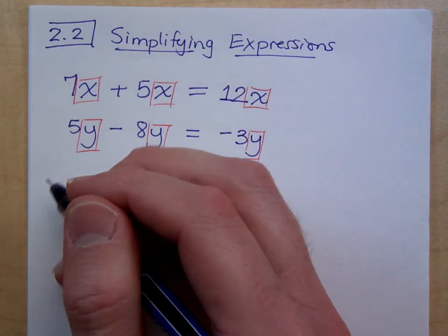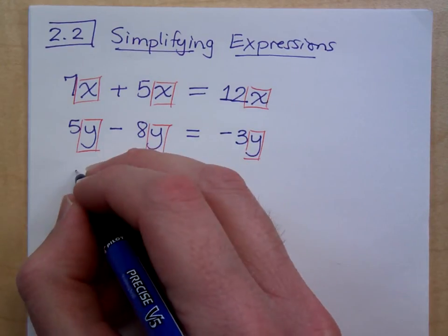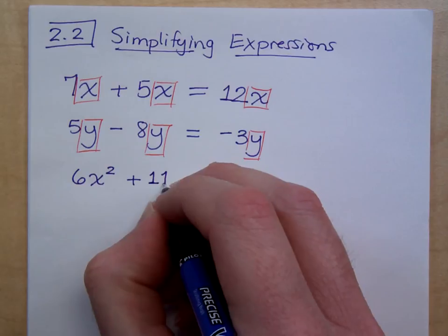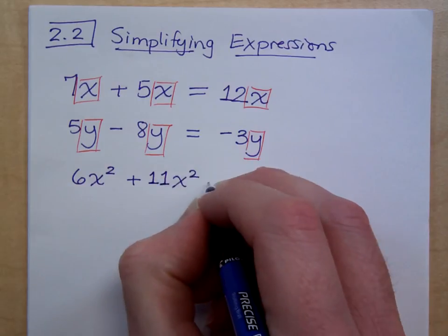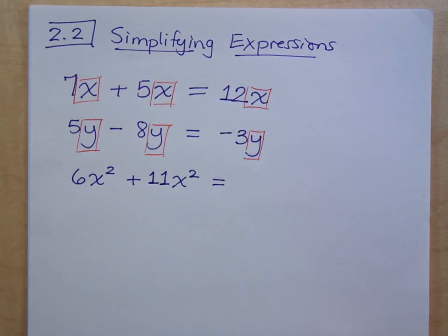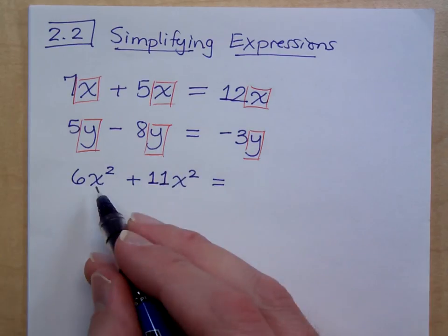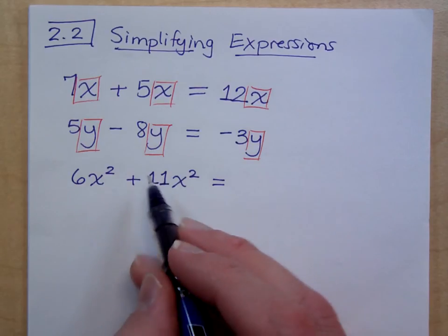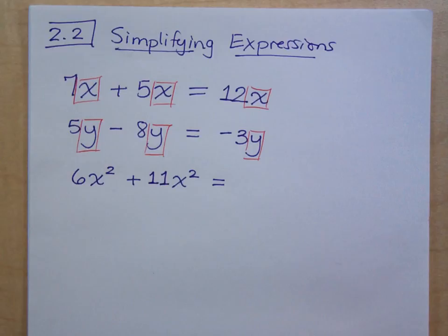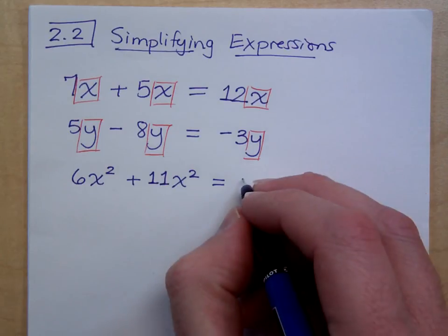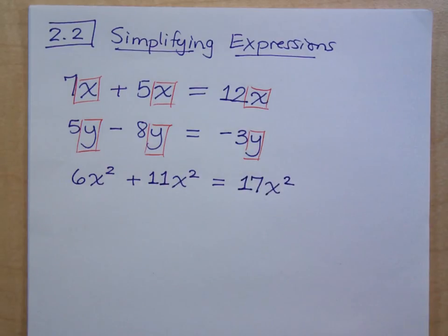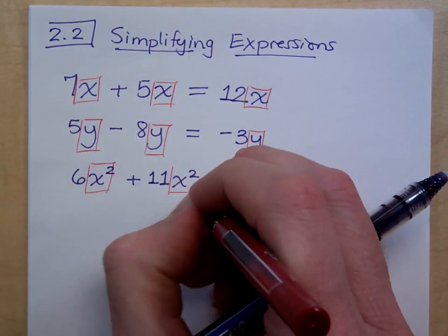Now we can make things a little more interesting. If I have, say, 6x squared plus 11x squared, are these guys like terms? They are like terms—not only do they have the same variable, but they have matching exponents. So what's 6x squared plus 11x squared? It's 17x squared, in the same pattern that we've been doing.